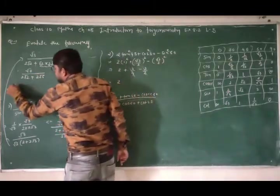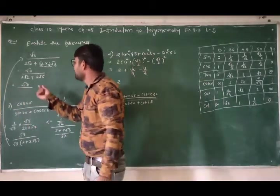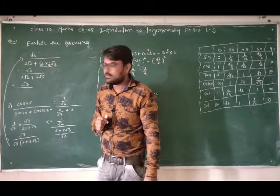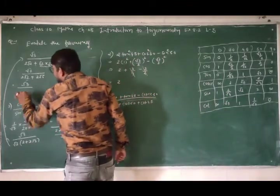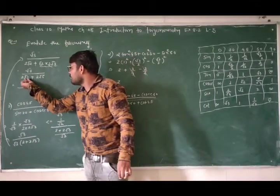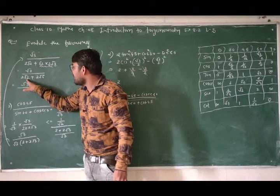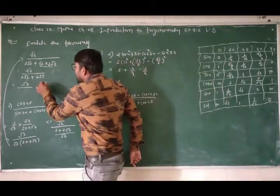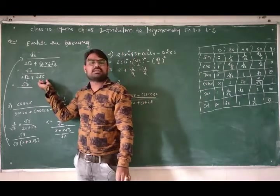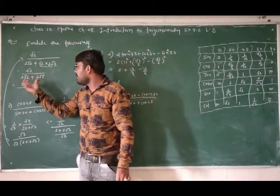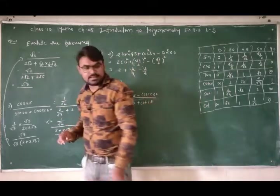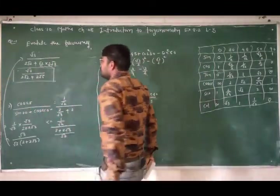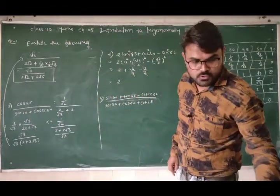ठीक है — तो नीचे addition होगा? नहीं होगा, क्योंकि addition/subtraction के लिए root वाला part equal होना चाहिए। यहाँ root2 है, यहाँ root6 है — तो इसका addition नहीं होगा। तो यह आपका answer रहेगा। This is your answer: 2root2 + 2root6 — यह denominator में है, ठीक है?